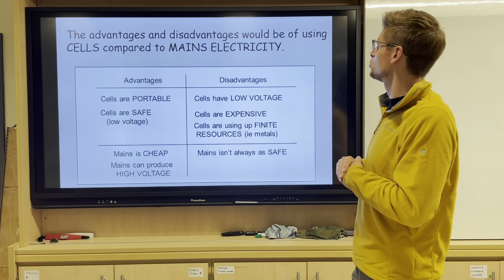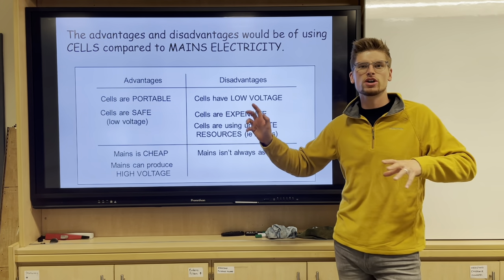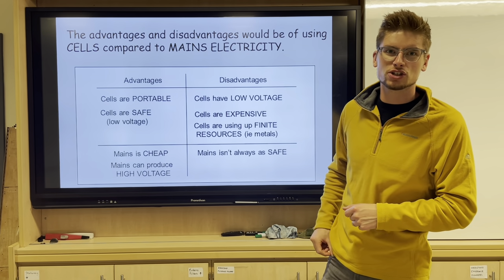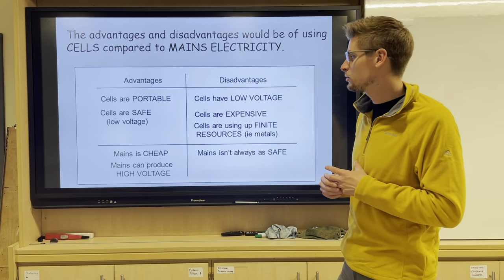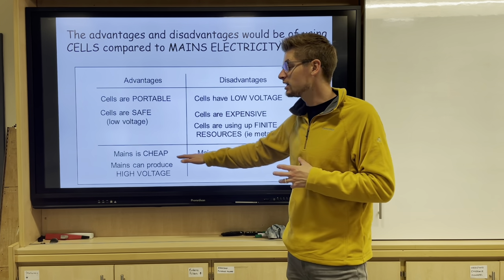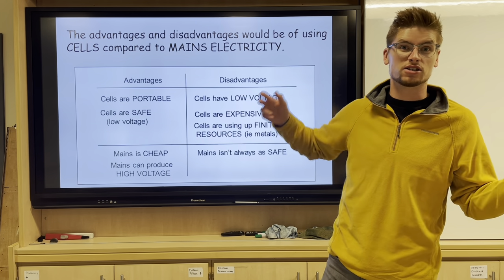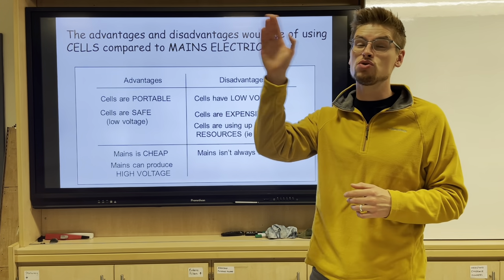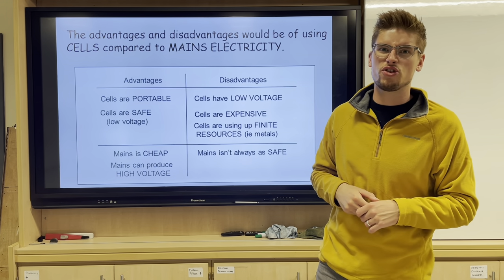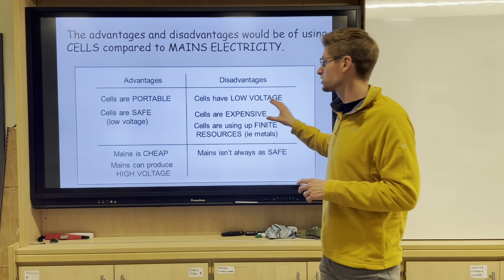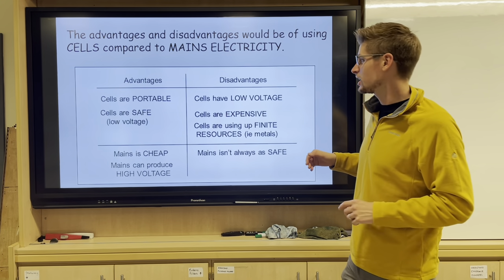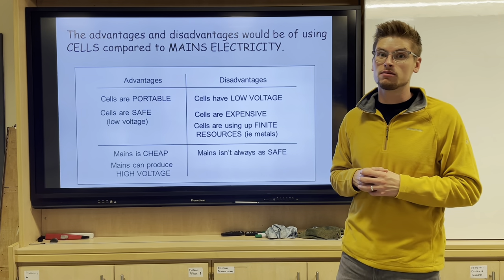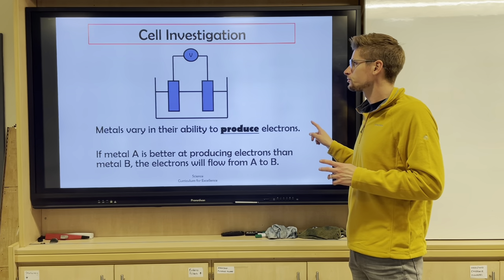The advantages and disadvantages of cells compared to mains electricity: cells are portable - you can put a battery in your pocket - and they're safe, not very dangerous. Mains electricity advantages are that it's cheap and it's always available, whereas batteries can cost six or seven pounds. However, mains can be high voltage - 230 volts through a socket - whereas a battery might be just three volts. Disadvantages of cells include low voltage, expense, and use of finite metal resources. The disadvantage of mains is that it isn't always safe and you can get quite badly shocked from a mains supply.